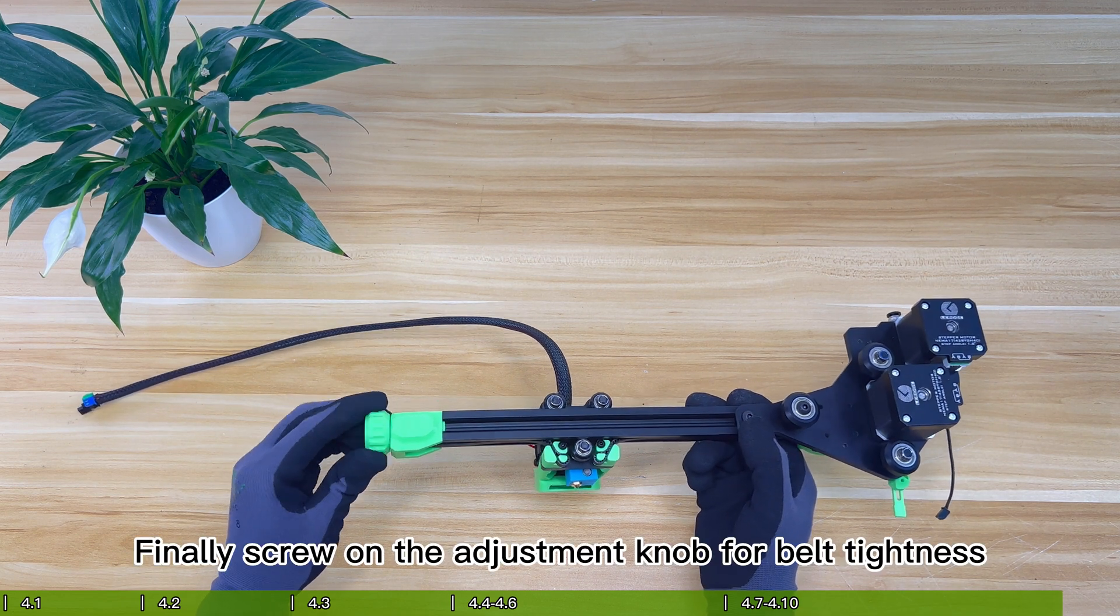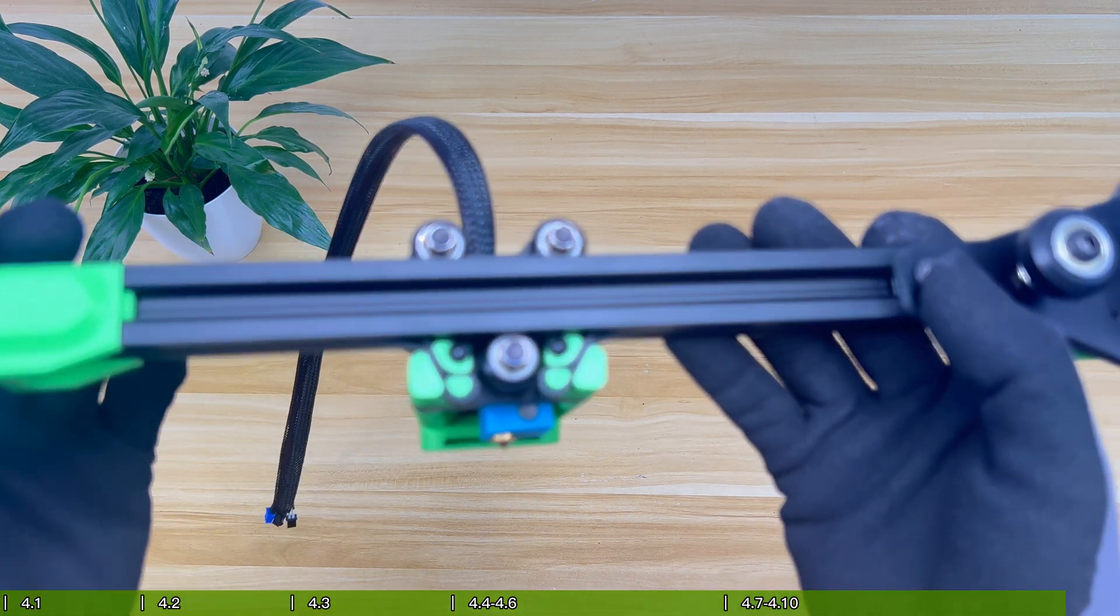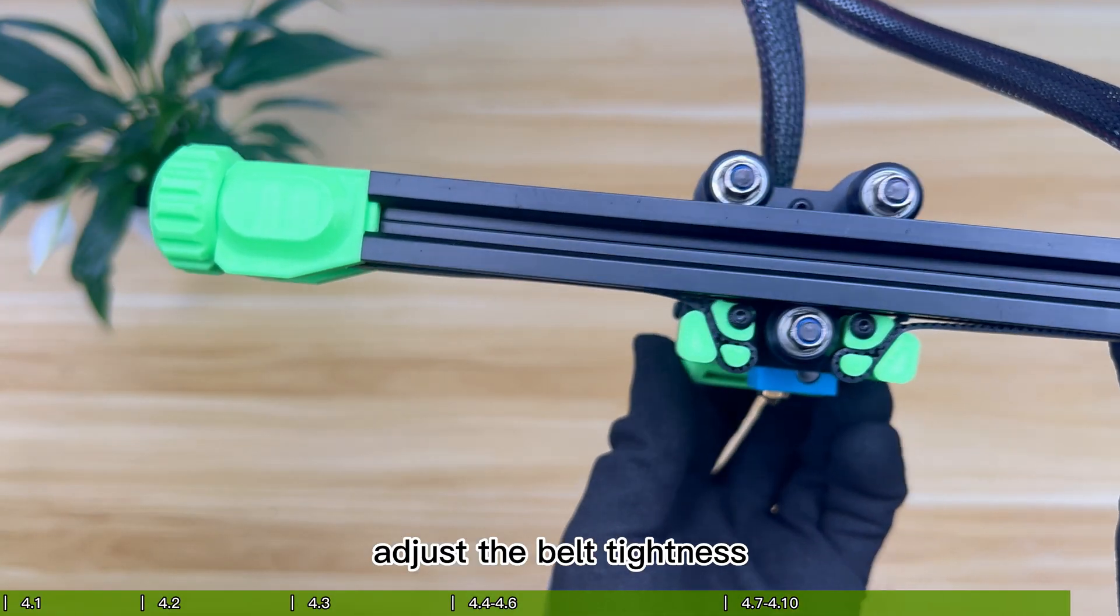Finally screw on the adjustment knob for belt tightness. Next, adjust the belt tightness.